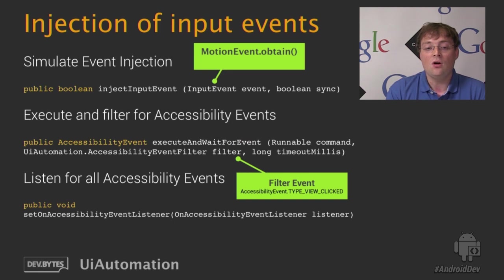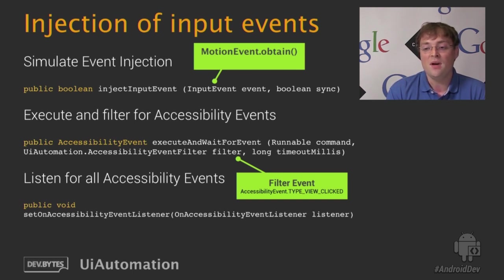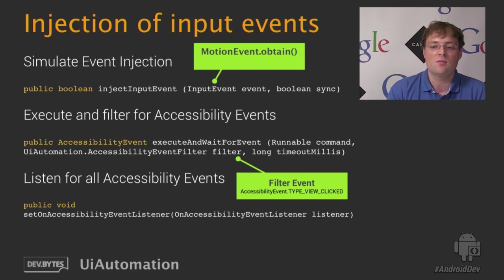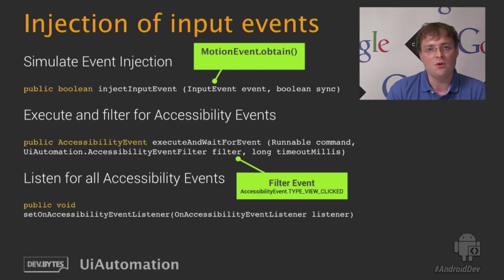UI Automation also allows for the injection of raw input events into the system. In order to inject an event, you have to call the injectInputEvent() method. For example, if you want to inject a motion event, just obtain an event object from the pool and pass it as a parameter. Note that it's your responsibility to recycle the input event and return it to the pool.